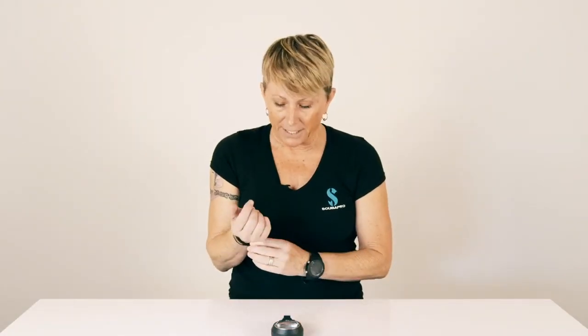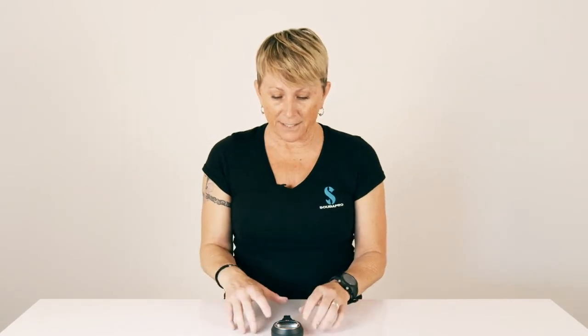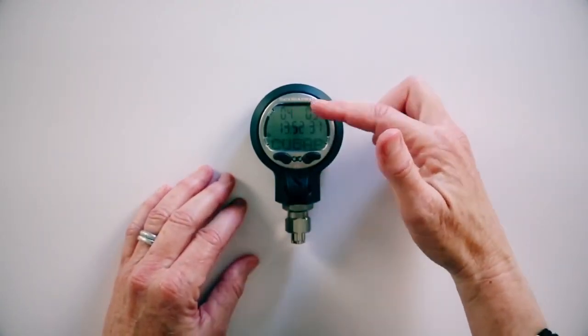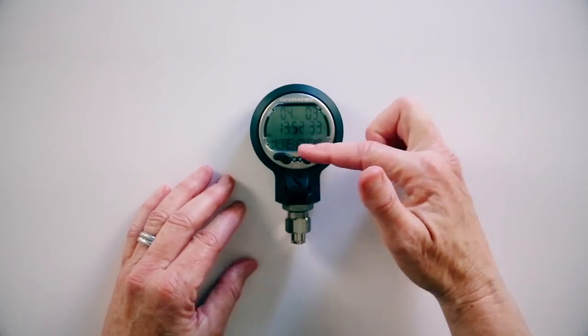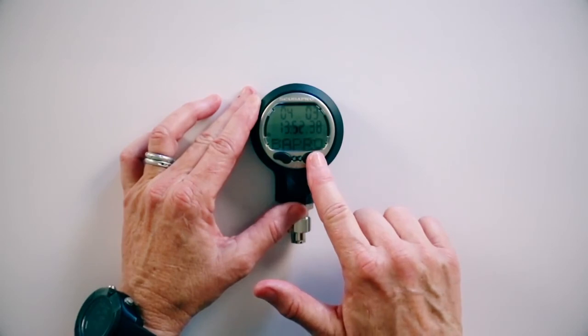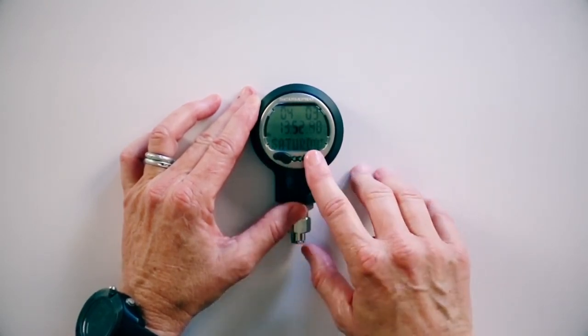We're going to go through the functions and have a look at the screen as we do that. I'm going to hit the right button, push and hold, and activate it. Now you can see that we've got date and time and the ScubaPro name scrolling on the bottom. We're going to go through the functions. This is the forward button, this is the back button.